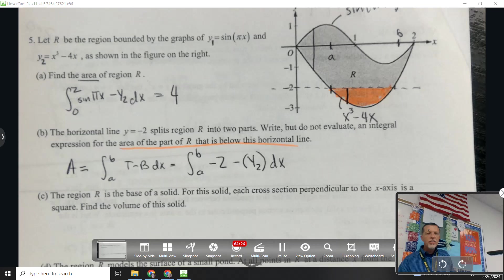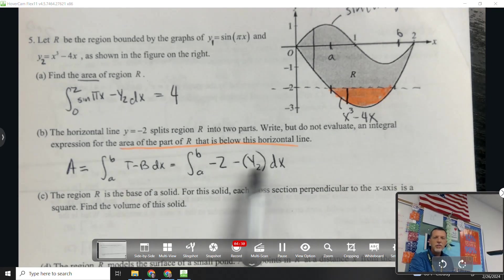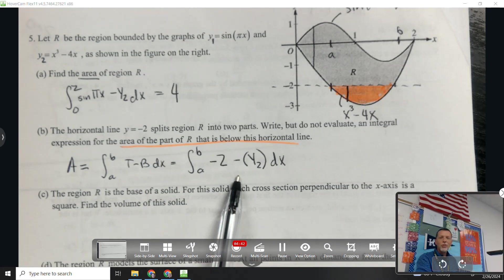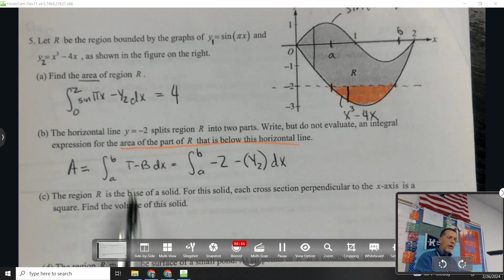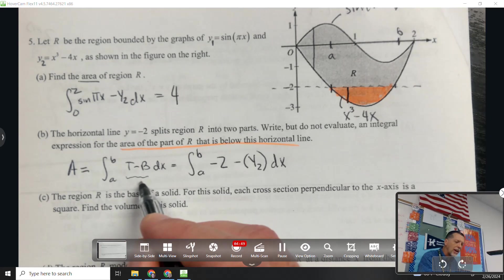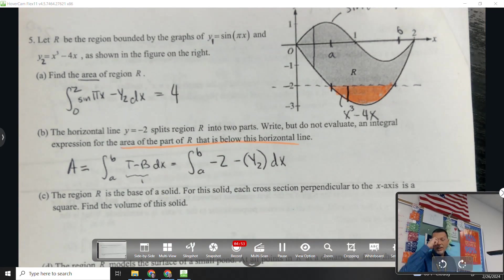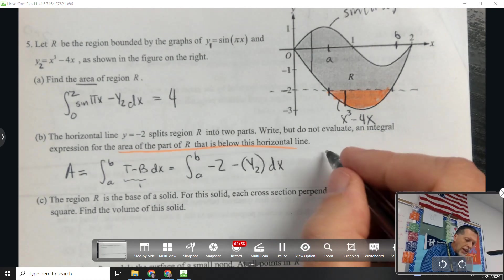So does this answer the question? Write but do not evaluate an integral that finds that area? Am I good with this? Why not? I didn't find a and b. So this probably would get partial credit. Because they probably would be looking for, like when you're grading, it tells you that if they get the integrand right, that's worth a point. If they get the limits right, that's worth a point. And so I'd probably get half the points on this. But I need to go figure out what a and b are.